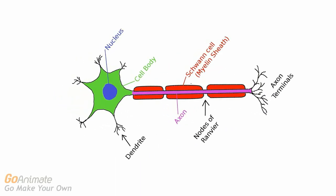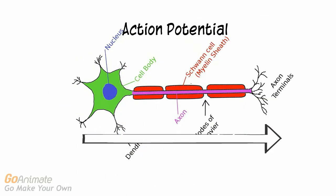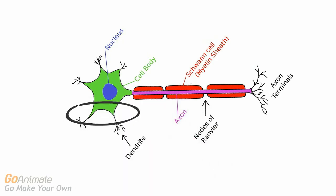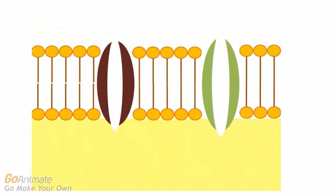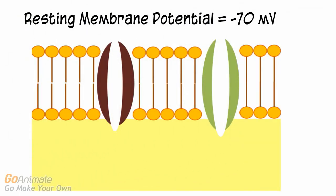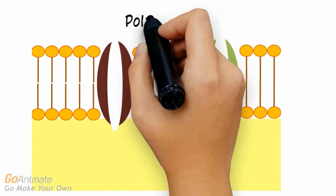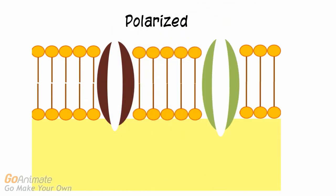In order for this communication to occur, neurons must generate an electrical impulse called an action potential. Let's take a closer look at the neuron cell membrane. The neuron's membrane contains protein channels and exists at a resting membrane potential of about negative 70 millivolts. We say that the neuron is polarized.